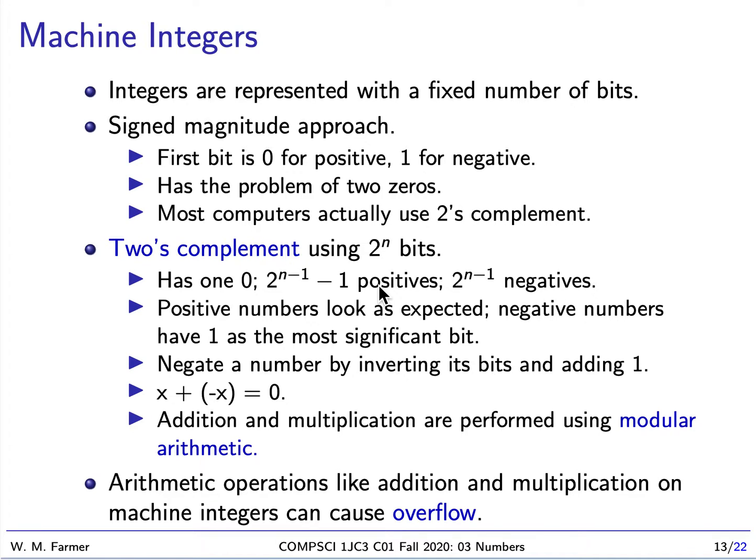Most computers use what's called the two's complement approach. Two's complement uses a fixed number of bits — specifically 2^n bits, where n is something like 8, 16, 32, or 64. It has just one zero, two to the n minus one minus one positive numbers, and two to the n minus one negative numbers.